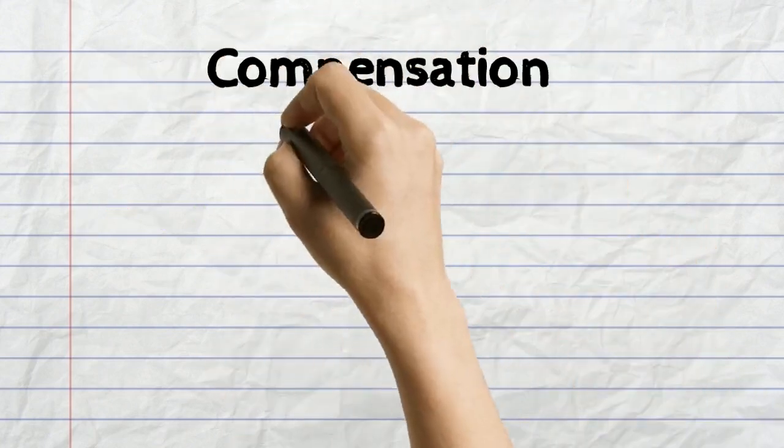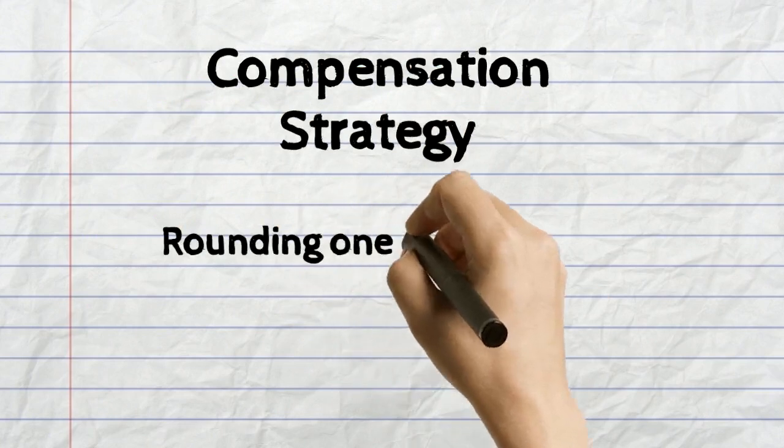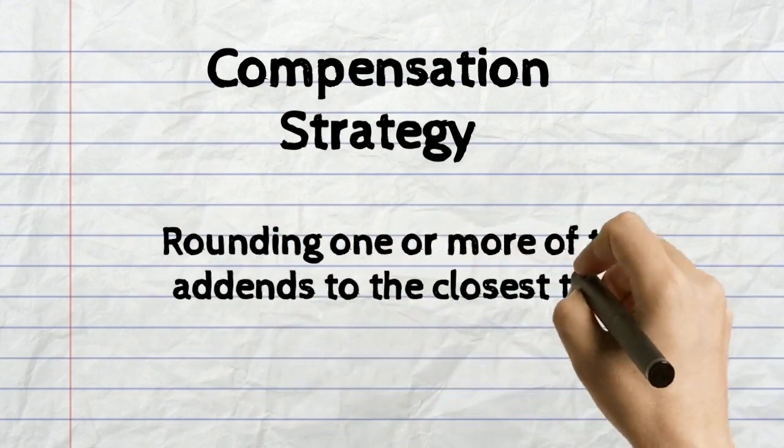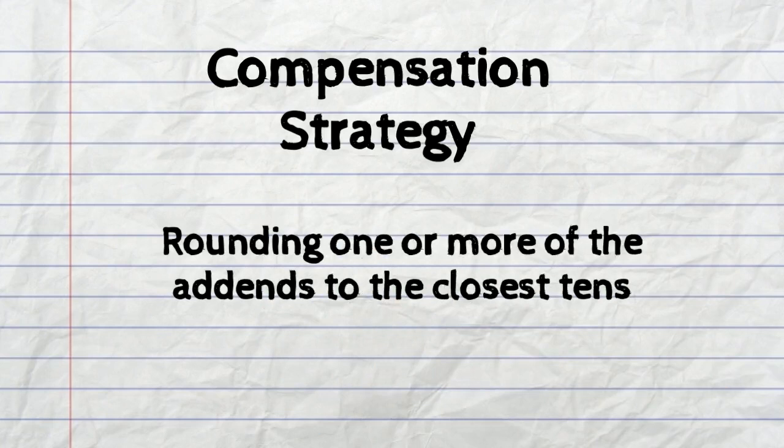The next strategy that we're going to learn about today is compensation strategy. This strategy is used to make a number sentence easier to solve by rounding one or more of the addends to the nearest 10.